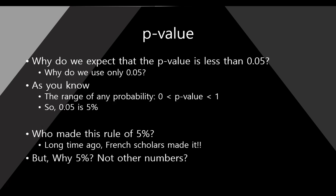Our question is: why do we expect the p-value to be less than 0.05? Why do we use only 0.05, and not 0.07, 0.1, or 0.5?